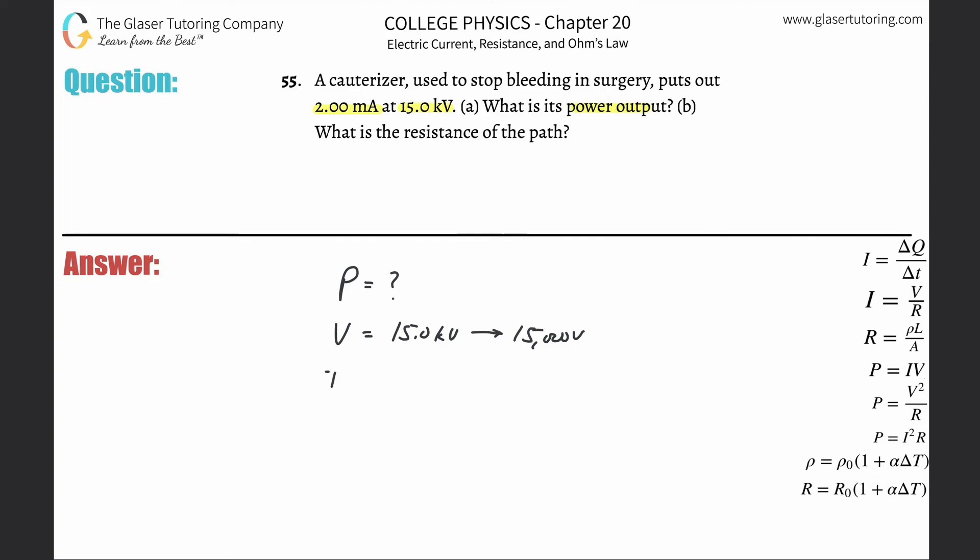Then we're going to look at the current, and they gave us, oh no, milliamps. We've got to convert that to amps, simply divide it by 1,000, or just tack on a times 10 to the minus 3 on it. And that will now be in amps.